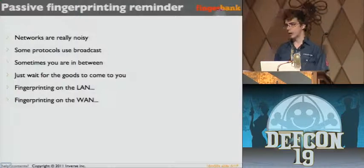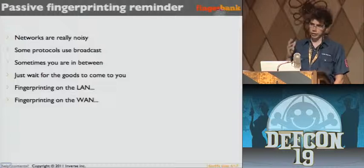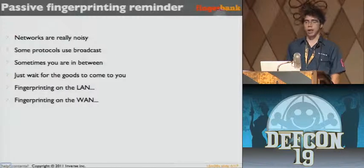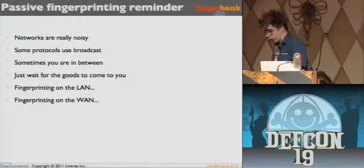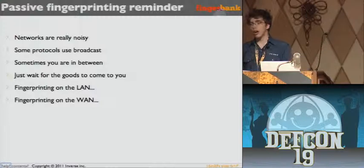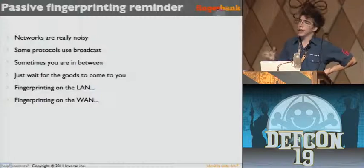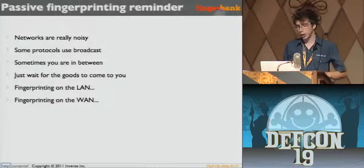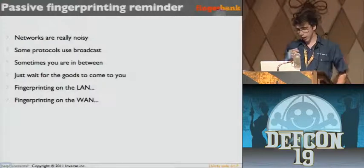Networks are really, really noisy — you probably already know that. You open up a TCP dump everywhere and there's always a lot of stuff going on, and a lot is about broadcast traffic. Sometimes you are in between — you are the gateway, or you have a mirror port — so you see all the stuff that's going on. The Wall of Sheep is a good example of that. If you can sit at a spot like that and sniff traffic, fingerprinting becomes really interesting because you'll be able to identify operating systems of your guests, the browsers, the version of software, and stuff like that.